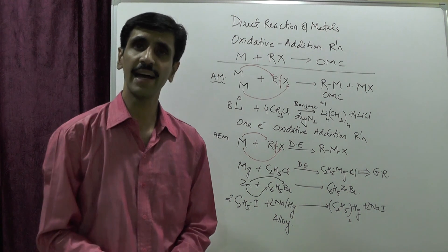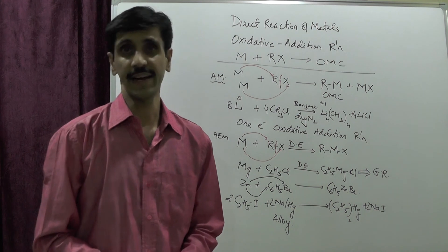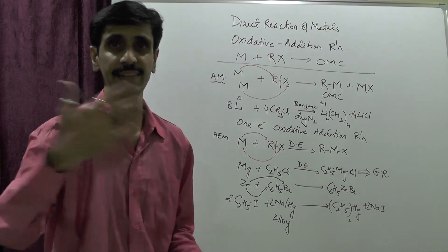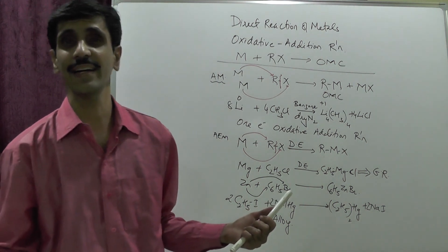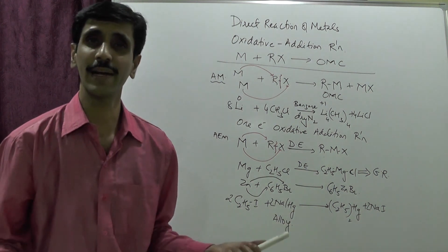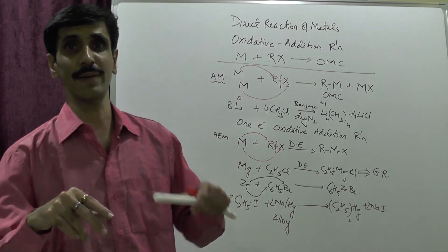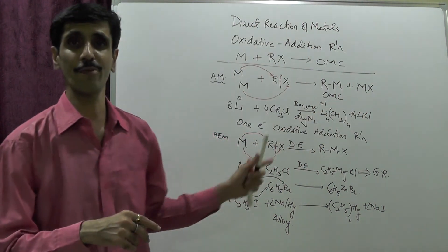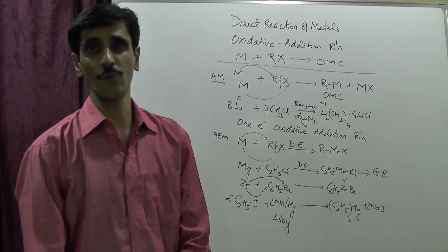So that is the first method — direct reaction of metals, also called the oxidative addition method. We took examples of alkali metals, alkaline earth metals, and D-block elements such as zinc and mercury. For less electropositive metals like mercury, the metal is used in the form of an alloy. I hope you have understood this first method of preparation very well.